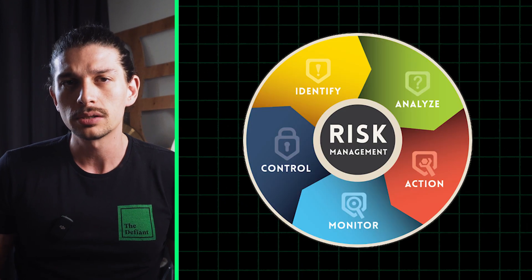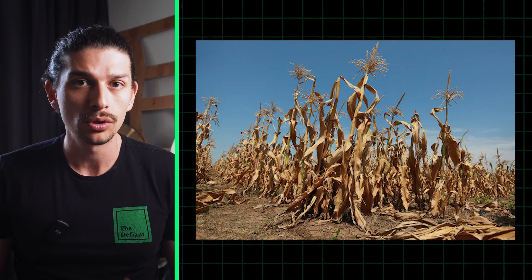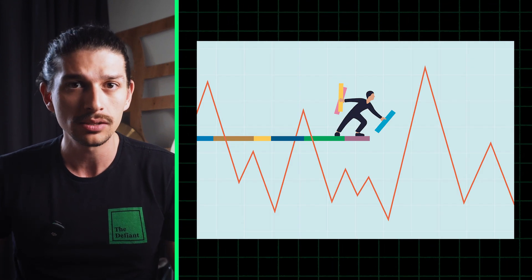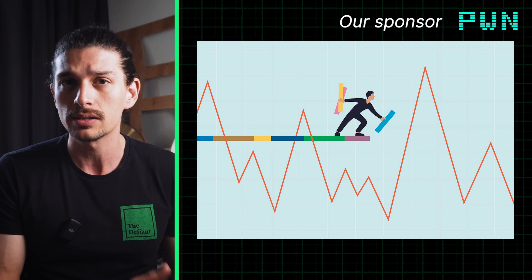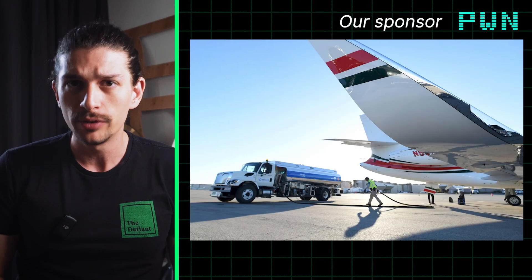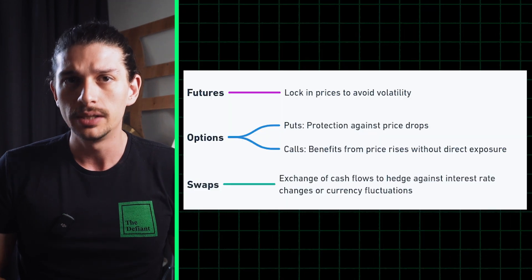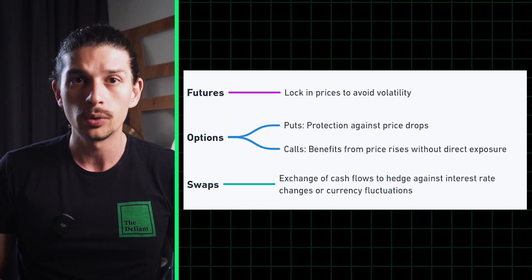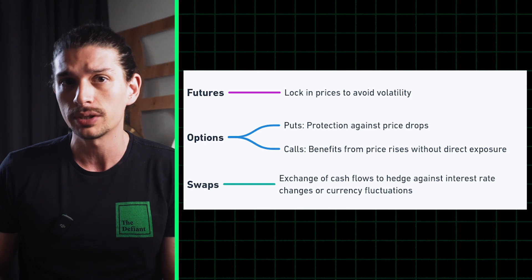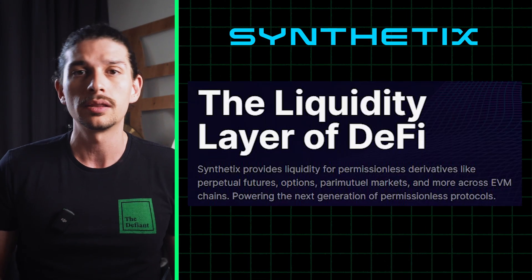But why do derivatives exist? The short answer is that it's all about managing risk. Just like farmers use contracts to hedge against crop failures, investors use derivatives to protect against market volatility. For instance, airlines lock in future fuel prices to shield themselves from sudden spikes. And DeFi derivatives work the same way, letting you hedge price risk and gain exposure to assets without owning them.